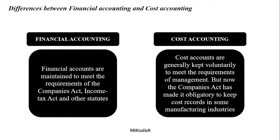Financial accounts are maintained to meet the requirements of the Companies Act, Income Tax Act and other statutes, so financial accounting is compulsory for the business to maintain. Whereas in case of cost accounting, generally it is voluntary — the business can decide whether to maintain cost accounts or skip this process. However, these days the Companies Act has made it obligatory to keep cost records in some manufacturing industries. For other industries it is voluntary, but for manufacturing industries it is compulsory to maintain cost records.